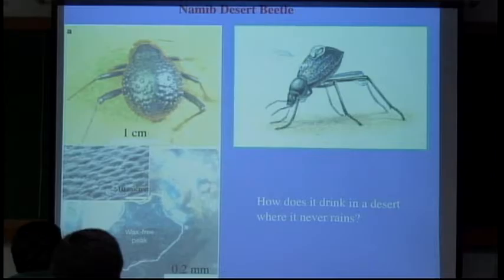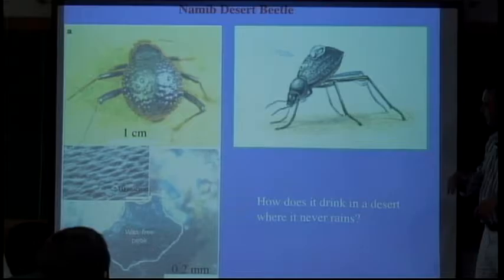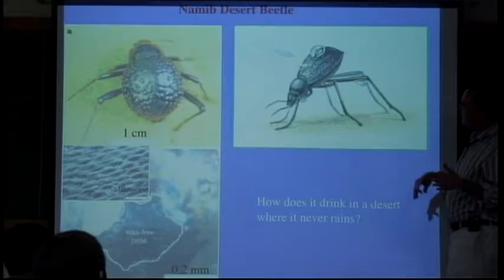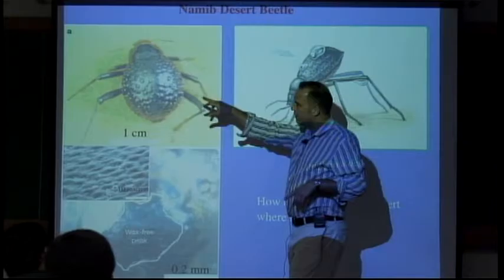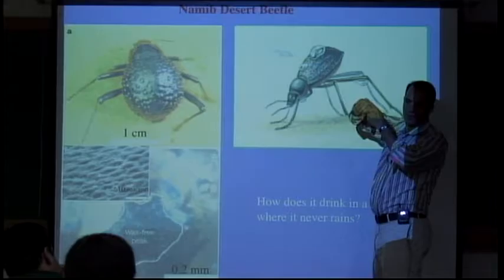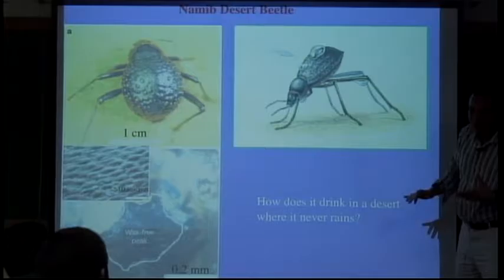This is a Namib desert beetle. It lives in a desert where it never rains, but it needs to drink regularly. What it does is climb up to the top of the sand dune, where sea breezes blow in carrying very small, micron-scale droplets. On their backs, they have texture with bumps that are hydrophilic — they like water — and valleys that are hydrophobic. The water wants to be on the bumps but not the valleys, so raindrops accumulate on the bumps, grow by accretion until they get large enough, then roll into the hydrophobic valleys and move up towards the mouth.